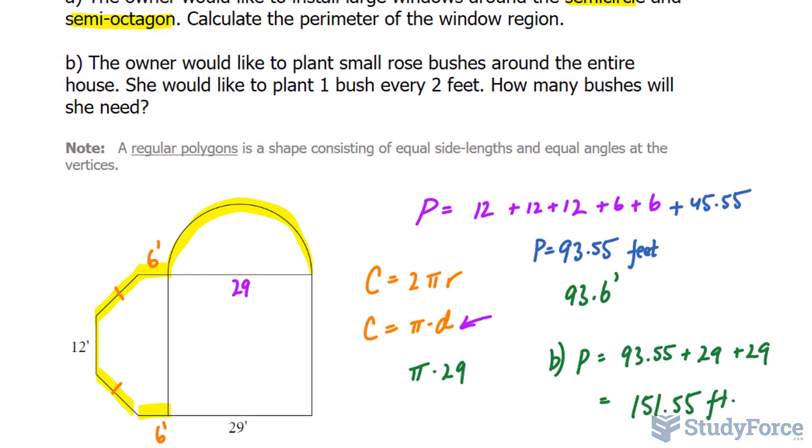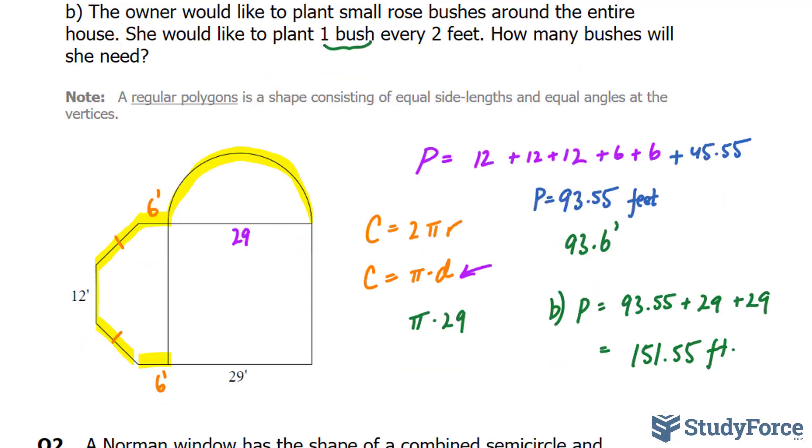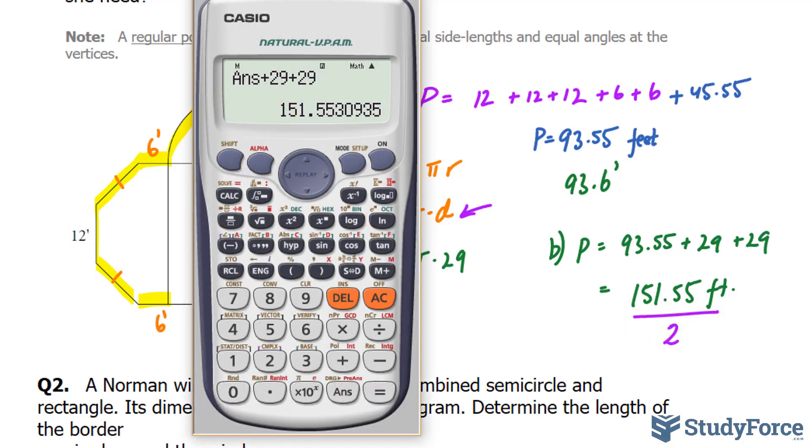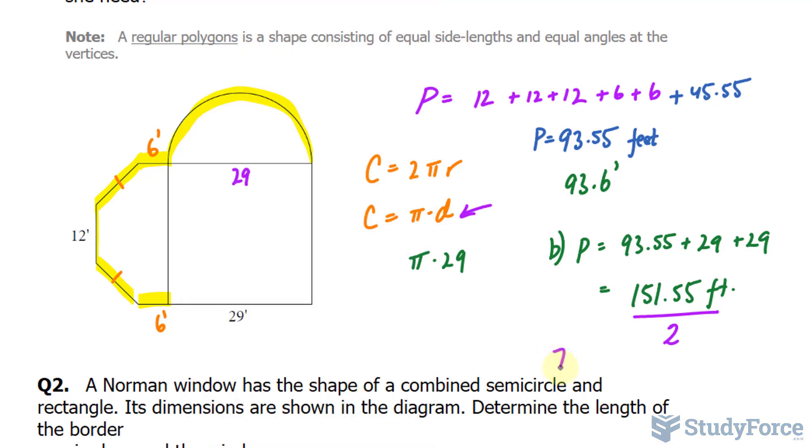Now according to the question, for every two feet, she wants to plant one bush. So we can take 151.55 and divide it by 2, because by dividing it by 2, we'll find out the total number of rose bushes, giving us a total of 75.77. So 75.77 bushes. But you can't buy part of a bush, you have to buy a whole bush, so we'll round this up to 76.